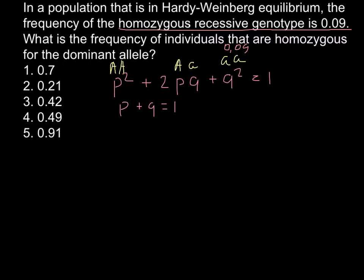That also means that 1 minus P equal to Q, and 1 minus Q equal to P. Now we also know that Q squared equals to 0.09.